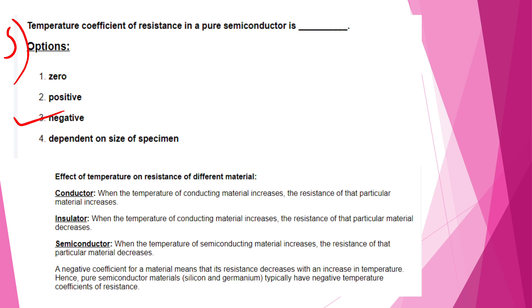Let's look at the effect of temperature on resistance in different materials. In a conductive material, as temperature increases, resistance increases. In the case of semiconductors, as temperature increases, the resistance of the material decreases. This is because the temperature coefficient is negative — resistance decreases with increasing temperature in a semiconductor material.